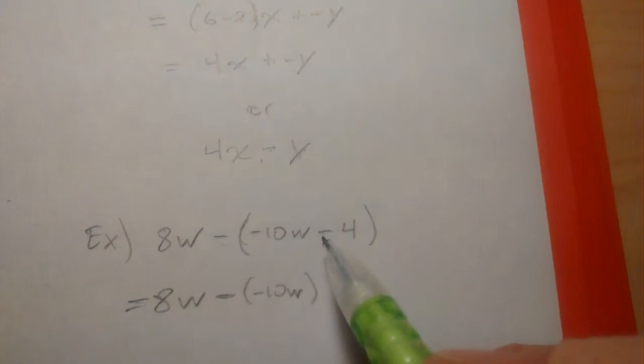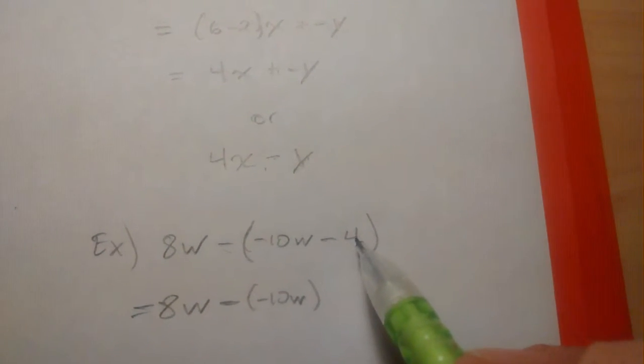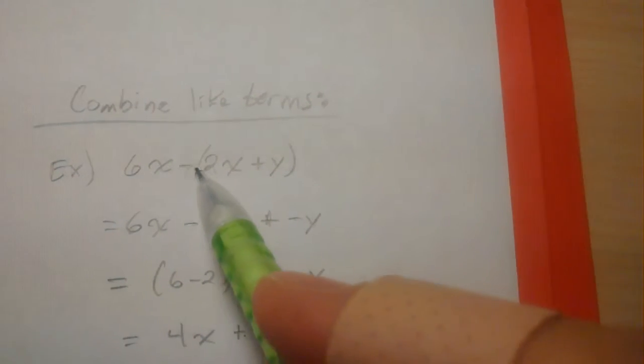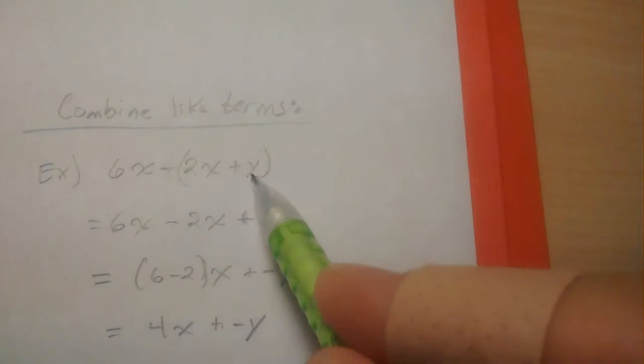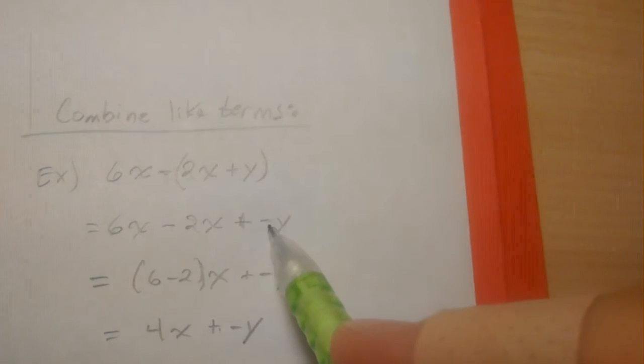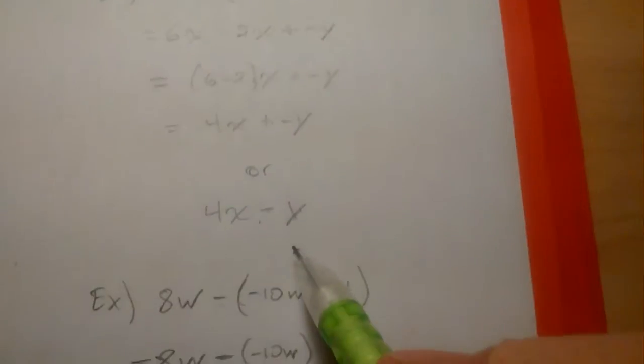And then we're going to subtract off a subtraction of 4. Well, like here, when we subtracted off the addition of y, we kept that operation and then thought of this as the negative of that.